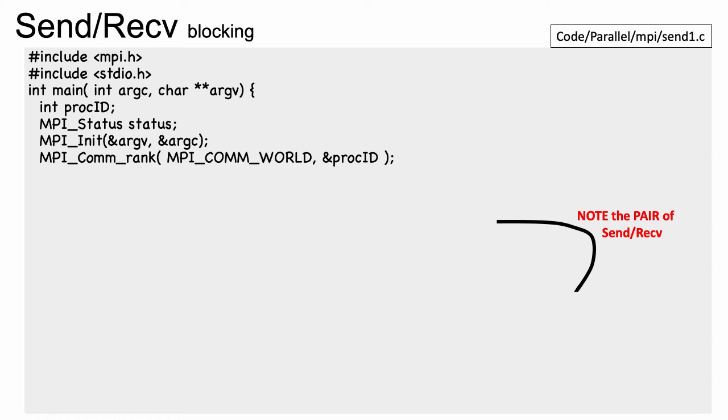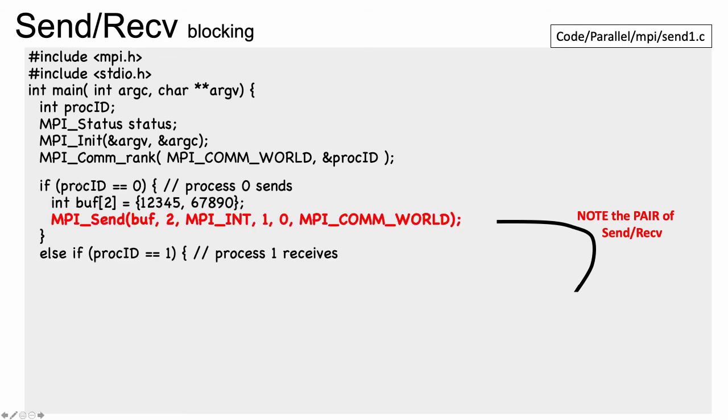So what we're going to do here is we have two processes. Process zero is going to send something to process one. And process one is going to spit it out. So here is process ID. If process ID equals zero, we create an integer array of size two. We put numbers in it. Process ID zero will invoke MPI_send. It will put in the address of the array to send, the number of elements to send, the element type, and then it's going to send it to process ID one. This is a tag that we're just going to always keep zero for the exercises today. And then MPI_COMM_WORLD.